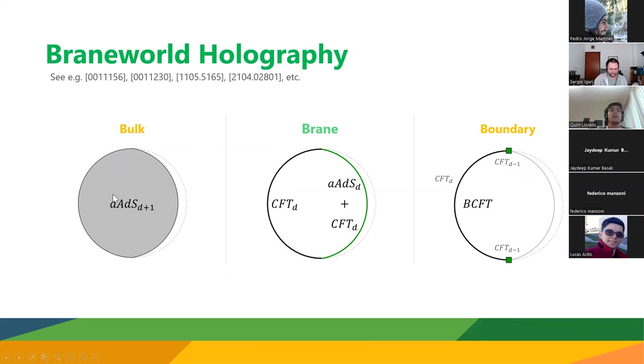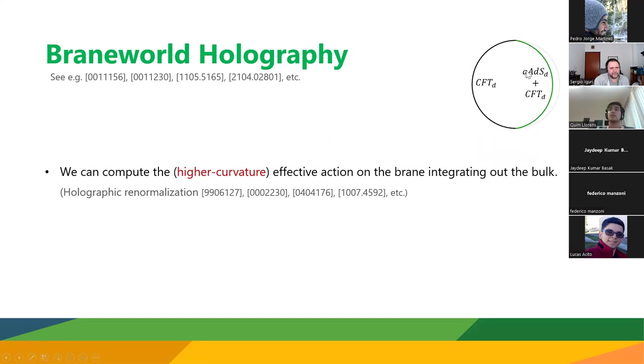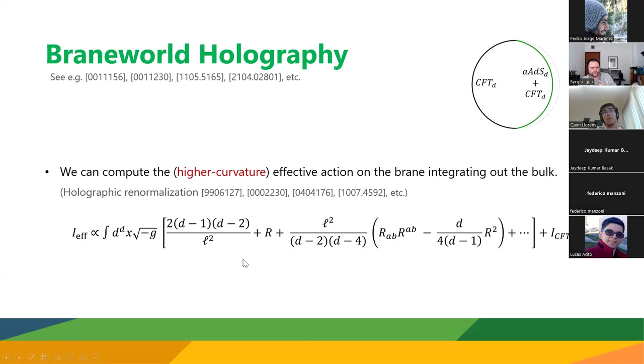What do we get? From the bulk point of view, as I've said, we have Einstein gravity in the bulk, but the spacetime ends at this end-of-the-world brane. From the boundary point of view, we have what's known as a boundary CFT. But what interests us most is the brane point of view, in which we integrate out the bulk but not the brane to obtain the following system: a CFT on the asymptotic boundary, and then on the brane, dynamical gravity coupled to a CFT with a UV cutoff. Both systems are connected through transparent boundary conditions when the brane reaches the boundary. This dynamical theory of gravity that we get on the brane is not just Einstein gravity but is a higher curvature theory of gravity that we can compute by integrating out the bulk using holographic renormalization.